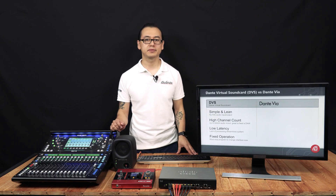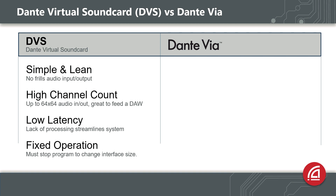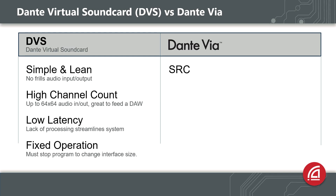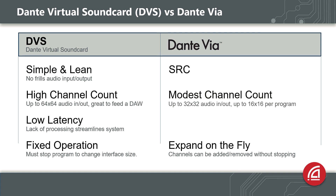DanteVIA is also a virtual soundcard, but it was designed to address a different set of challenges. To adapt to the requirements of different applications, DanteVIA includes sample rate conversion and handles this automatically. The interface to the Dante network will always be 48 kHz, but you can now adapt to anything inside the computer. Unlike Dante Virtual Soundcard, DanteVIA's interface can expand on the fly. It can support 32 channels in total, with up to 16 channels to a single program. DanteVIA is able to work with almost any audio interface, even built-in soundcards, USB or FireWire interfaces, and we can expose them to the Dante network.